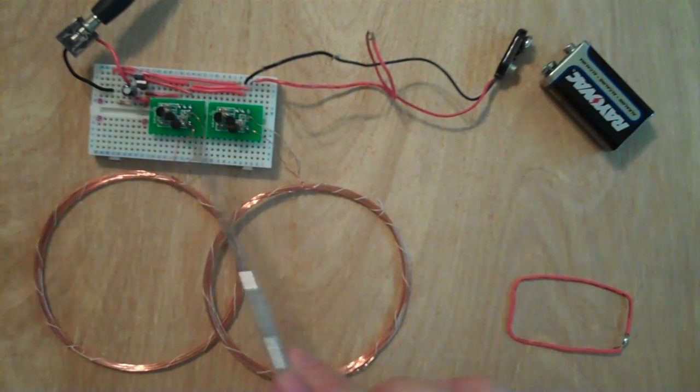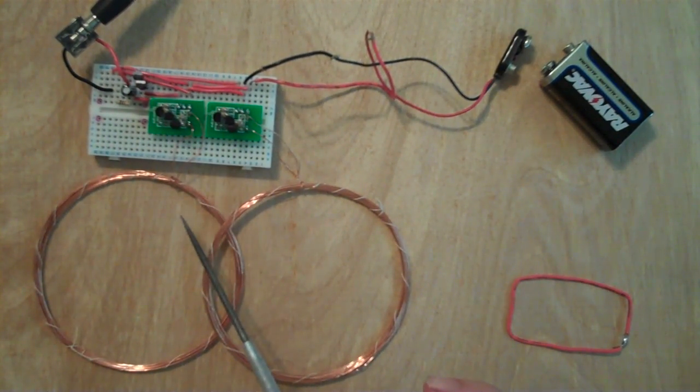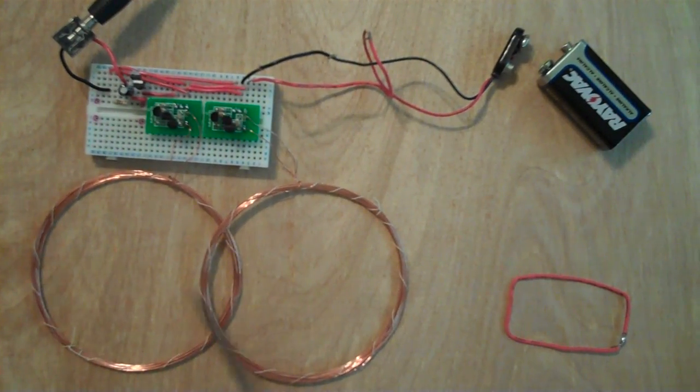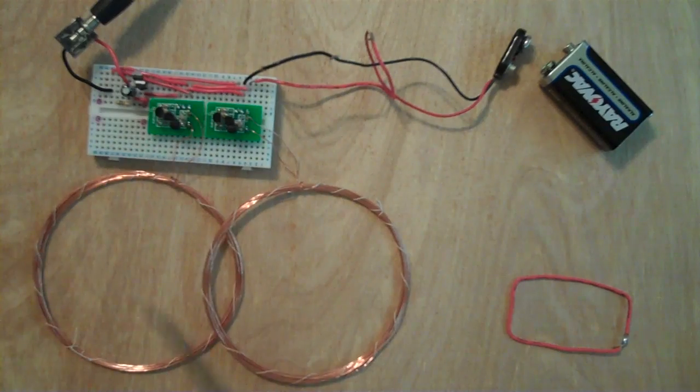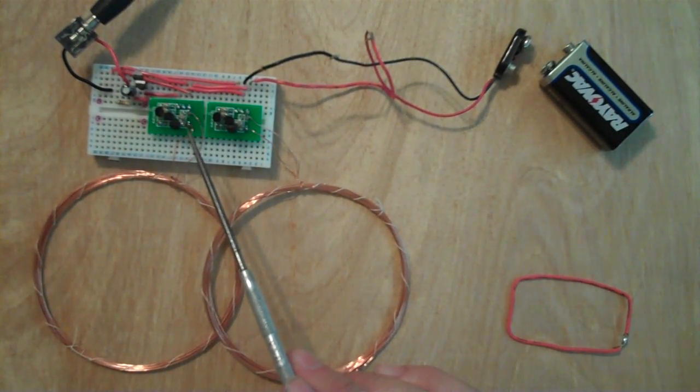These two devices right here, these two modules, are modules that I sell on eBay and they're actually just meant to drive a single coil. With this configuration, this is about a 3.5 inch diameter, 20 turns, produces about 430 kilohertz.